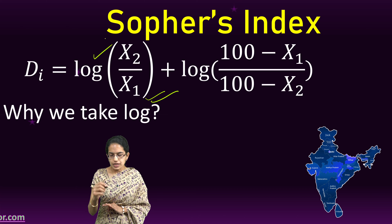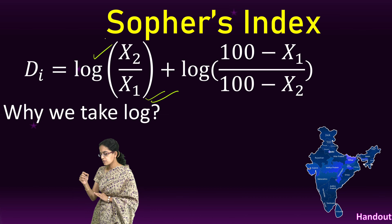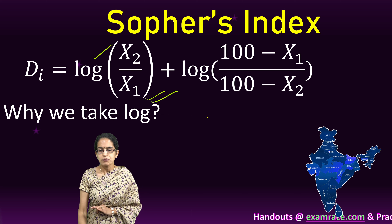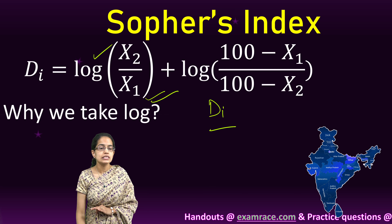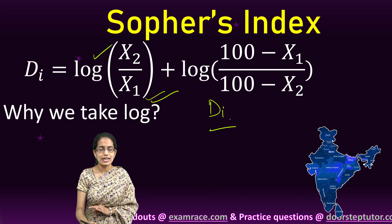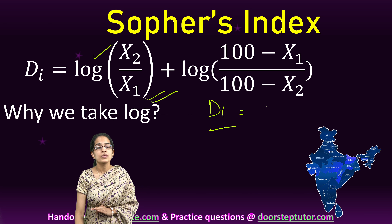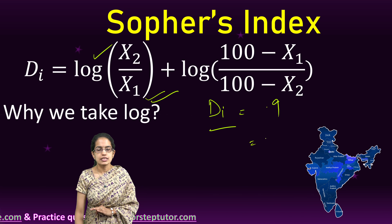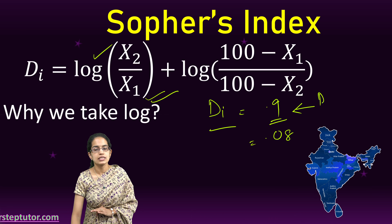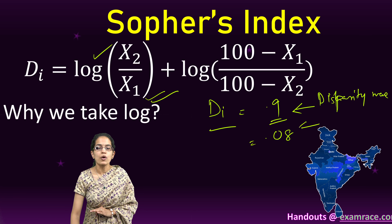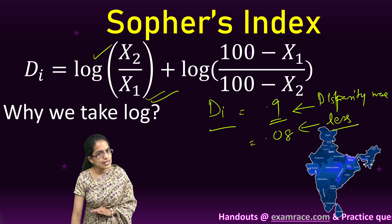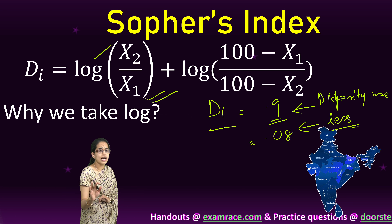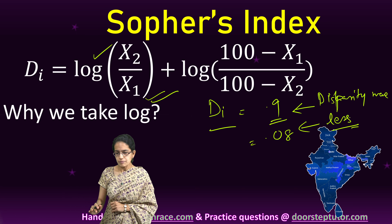A very important idea is that with this we calculate the disparity. If my values for the D-index — the disparity index calculated here — are bigger, let's say 0.9, versus a second case of 0.08, then 0.9 is higher, meaning there is higher disparity. When it is 0.08, the disparity is less. That is how we understand the calculation of the disparity index.